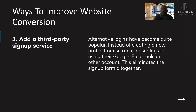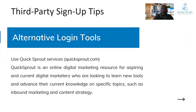Another tactic is adding a third-party sign-up service. When a visitor hits a call to action, offering sign-up via email, Facebook, or Gmail automatically populates their information. The easier you make it for people to submit their details, the more likely they are to do so. If you require a lot of information, auto-population services reduce friction and prevent drop-offs.